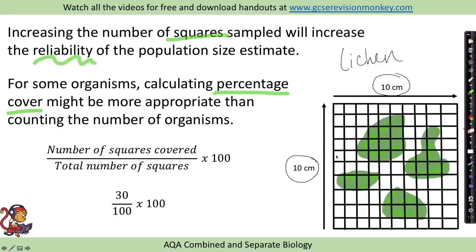If you wanted to sample lichen, you might use a really small quadrat, perhaps a 10 by 10 centimeter grid. In the previous example with daisies, we would look at one random square and calculate the number of organisms inside. However, with lichen we can't do this because you can't see individual organisms.